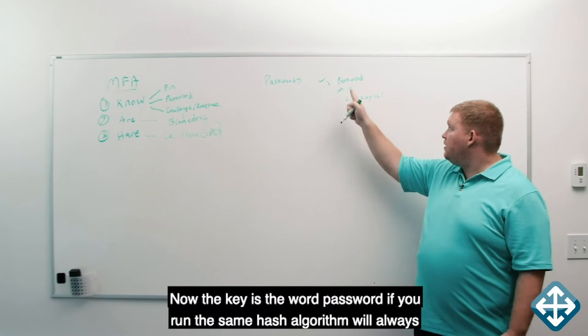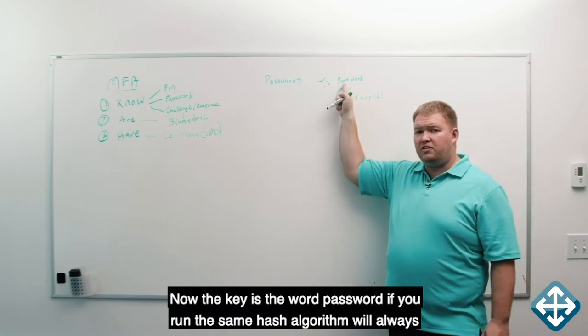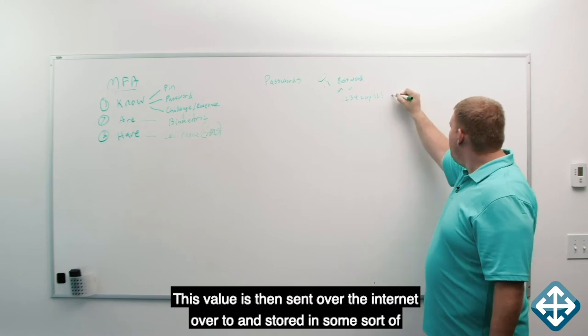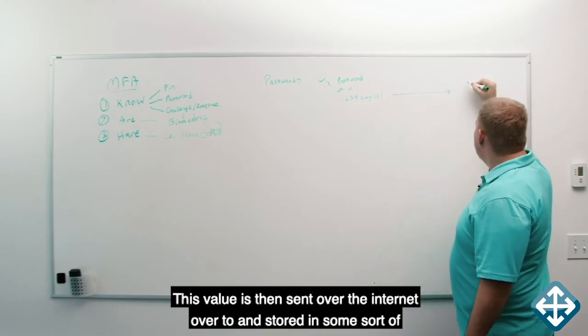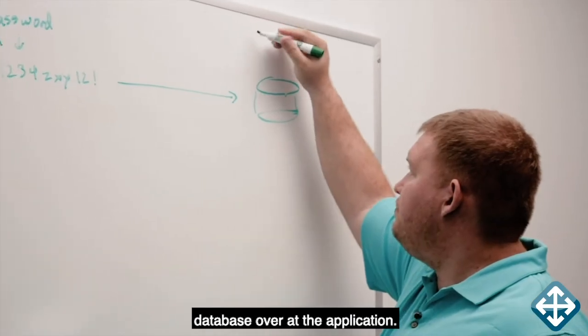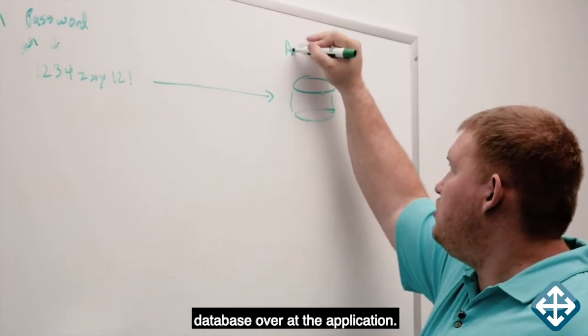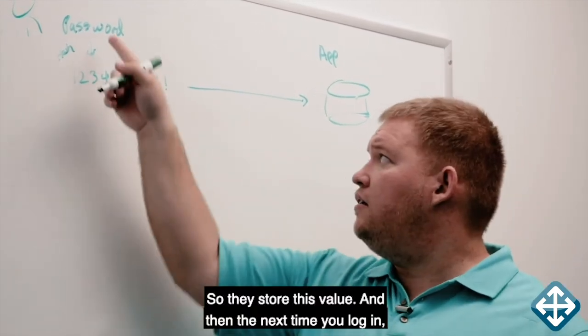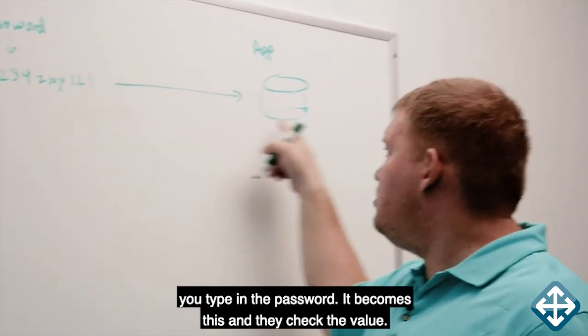Now, the key is the word password, if you run the same hash algorithm, will always come out to the same value. This value is then sent over the internet and stored in some sort of database over at the application. So they store this value. And then the next time you log in, you type in the password, it becomes this and they check the value.